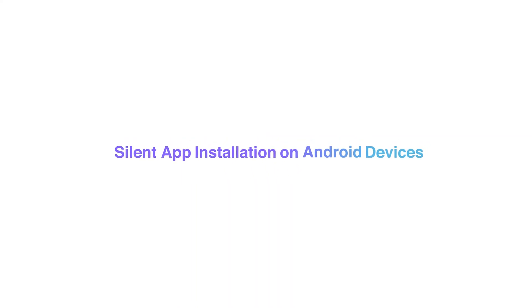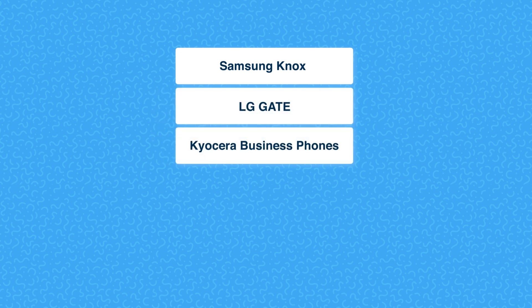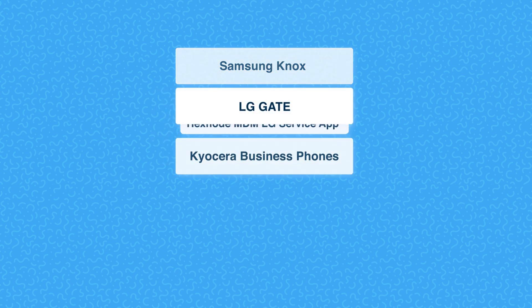Silent app installation on Android devices. On Android devices, apps can be silently installed only on Samsung Knox, LG Gate, and Kyocera devices.